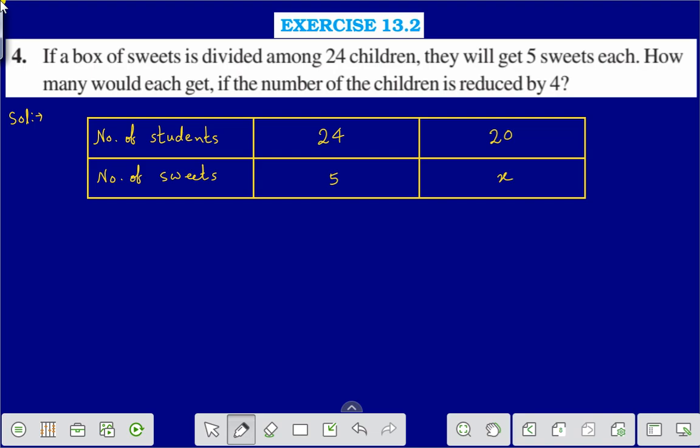Here you see, I have taken a table with the given information. When the number of students is 24, they will get 5 sweets each. When the number of students is reduced by 4, that means the number of students will be 20, then the number of sweets will be x. Let the number of sweets be x.